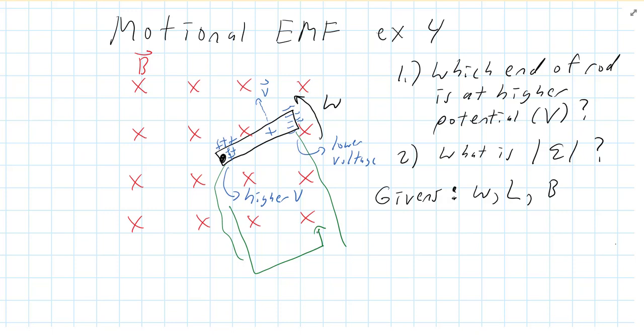So that's which end of the bar is at a higher voltage, the part that's pivoted in this case. Now, what's the magnitude of the EMF? Well, we'd like to use our equation E equals BLV.